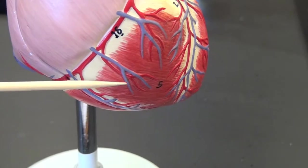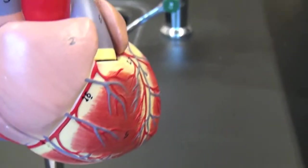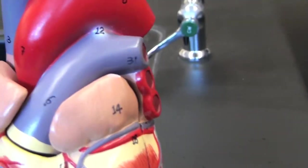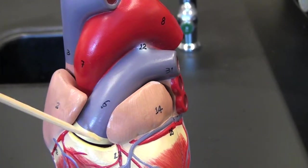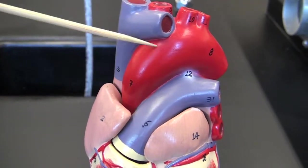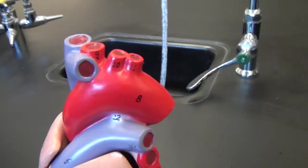Right ventricle, pulmonary trunk, ascending aorta, arch of the aorta.